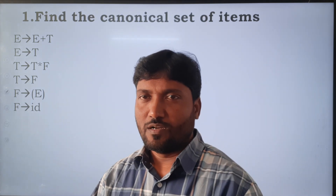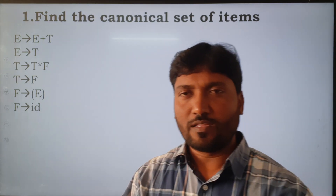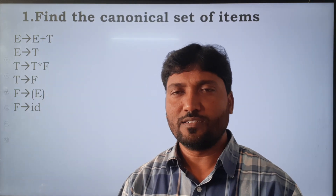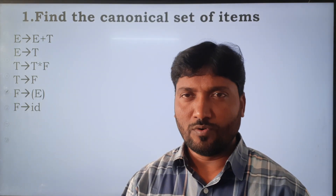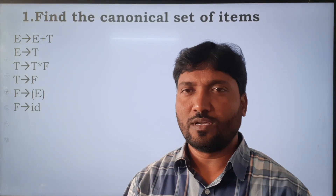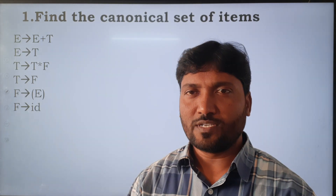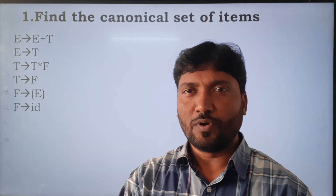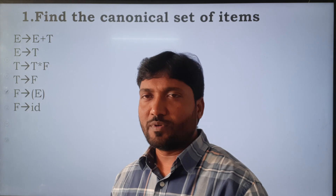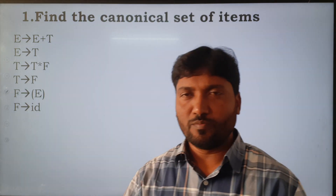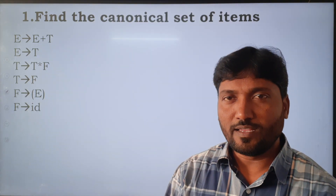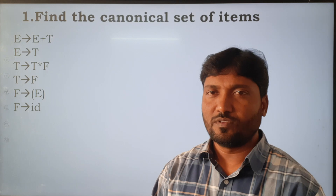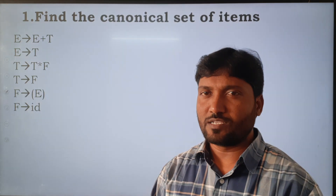As we know how to calculate the canonical set of items by using closure and goto functions. If you want to know more details about the closure and goto functions, please watch my previous video uploaded on my channel. Now we are going to take a simple example to understand clearly how to find out the canonical set of items for the given context-free grammar.